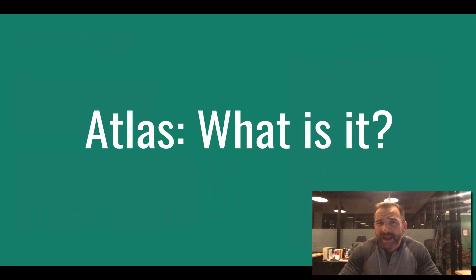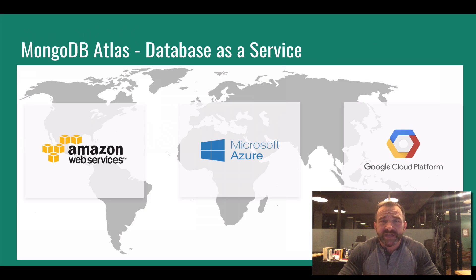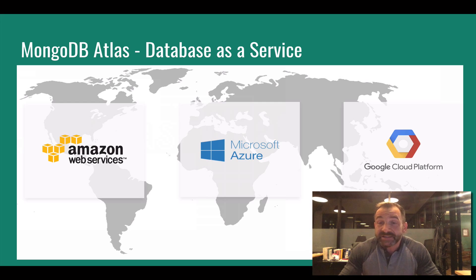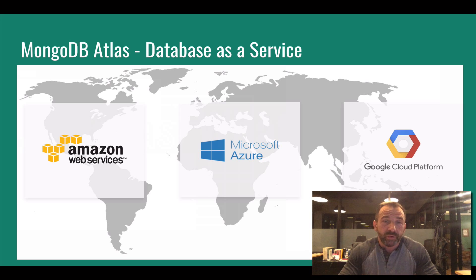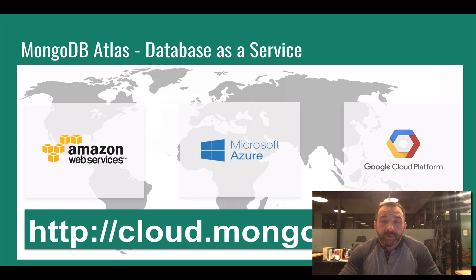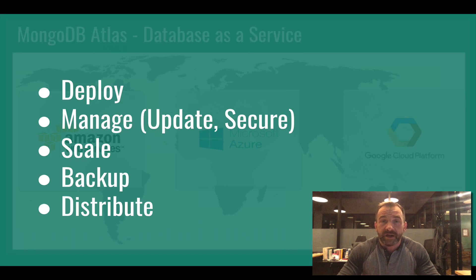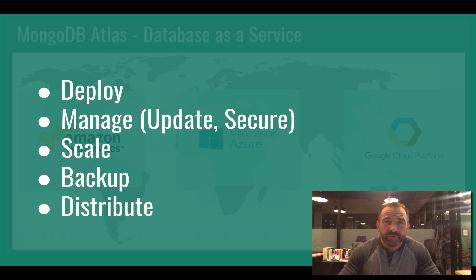We're going to talk about Atlas as we go through this hackathon guide. Atlas is a database as a service which allows you to deploy and manage your MongoDB instances very easily. The database instances themselves will live in one of the three major cloud providers: Amazon Web Services, Microsoft Azure, and Google Cloud. You can choose at the time you deploy. You can register and begin using MongoDB Atlas at cloud.mongodb.com. You can deploy, manage, scale, backup, and distribute your database resources from within MongoDB Atlas.